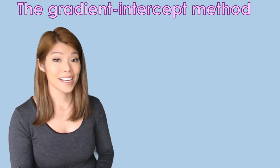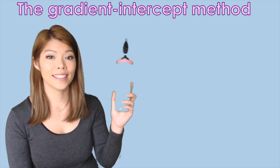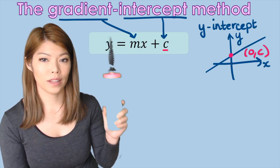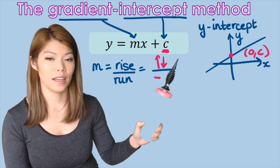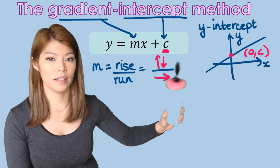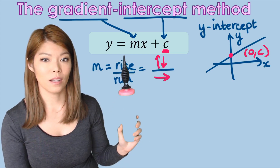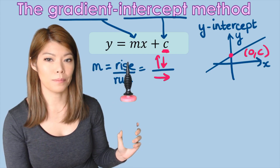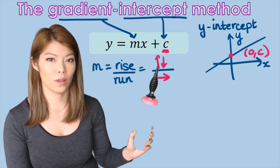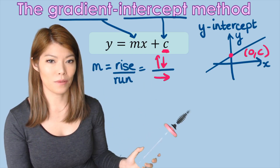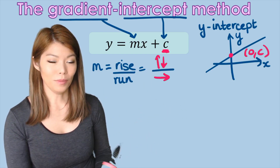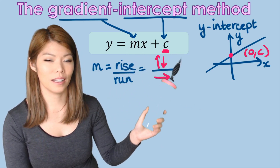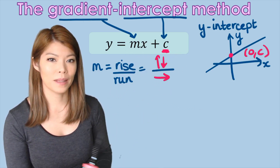The third method is the gradient intercept method. We look at the equation and identify the gradient and the y-intercept — the y-intercept being the value c at (0, c). For the gradient, we move our next coordinate by the rise — whether we go up or down — and then by the run. Before we practice, let's revise finding the gradient and y-intercept.